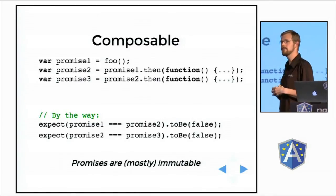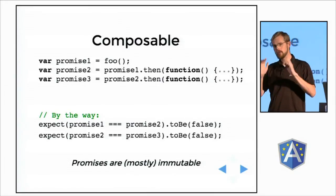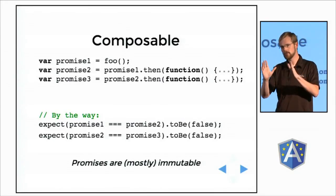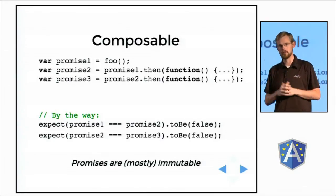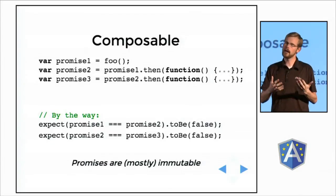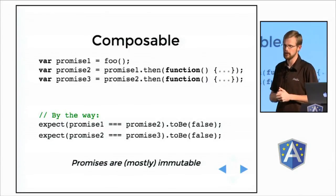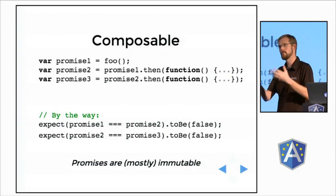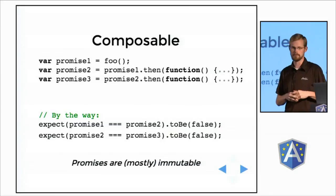Promises are pretty functional. As far as the observer is concerned, they are immutable. They do actually have state that changes internally, but from my vantage point, they look immutable.